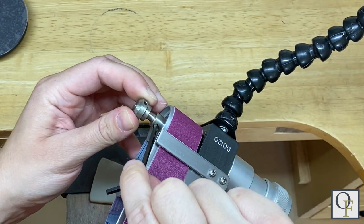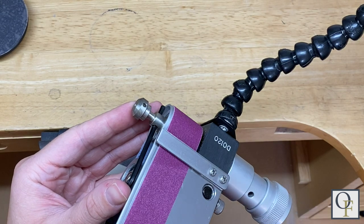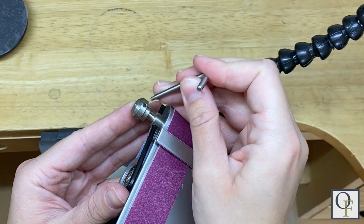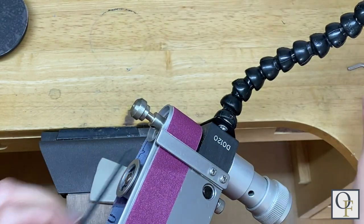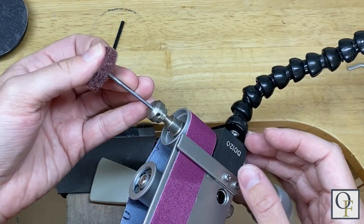Now let's talk about that fixed tool arbor. Use these two keys provided to tighten and loosen the arbor. Once it's loose you're able to add your 3/32 inch shaft mandrel.